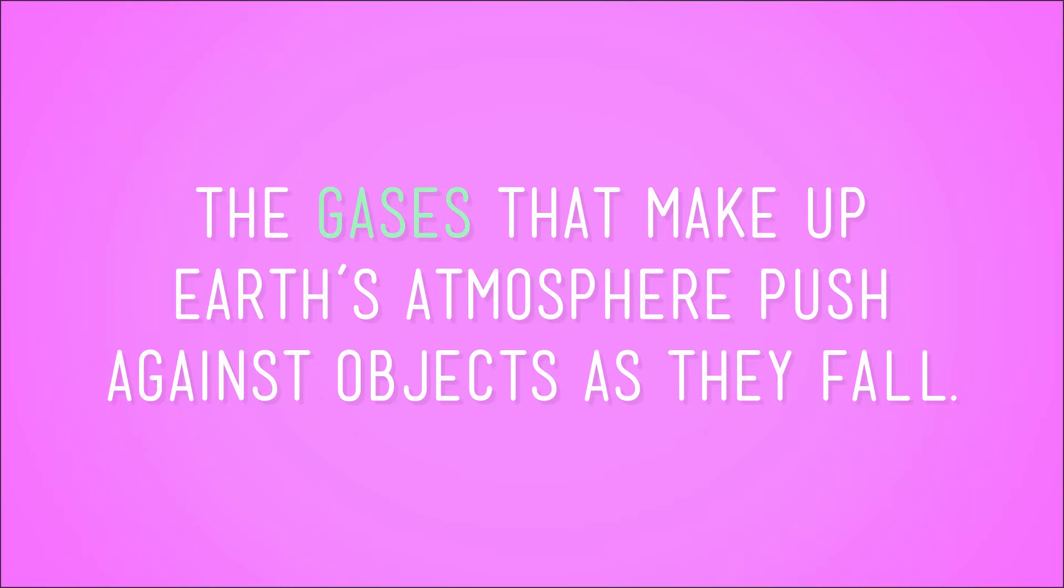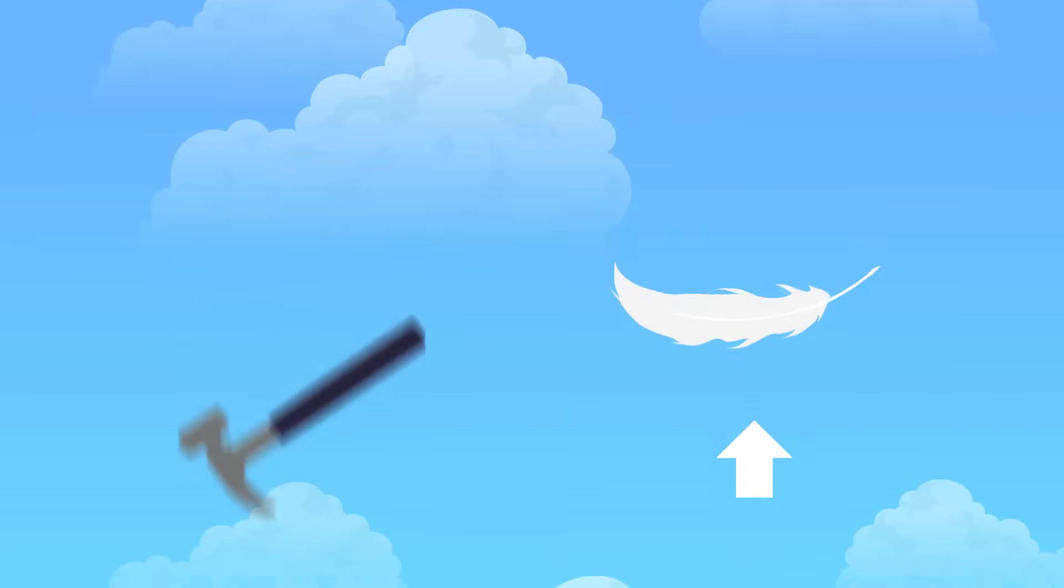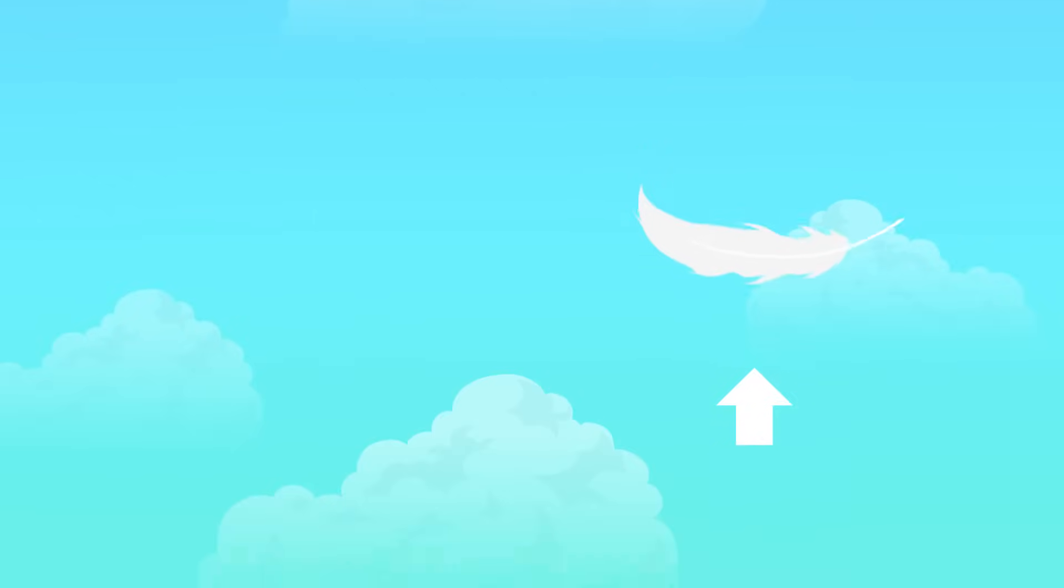The gases that make up Earth's atmosphere push against objects as they fall. And the push of the air against the falling object causes friction. We call that friction air resistance. So on Earth, the feather's flat, fluffy shape makes it run into more air resistance than the hammer does. This makes it fall more slowly than the hammer.